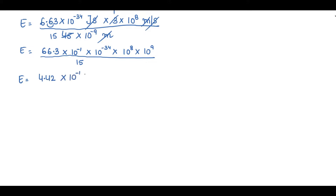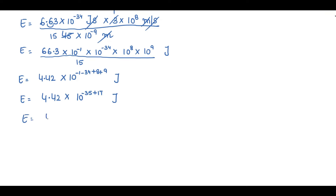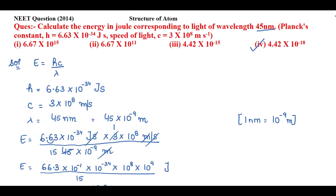Adding the powers of 10: (−1) + (−34) + 8 + 9 = −35 + 17 = −18. Therefore E equals 4.42 × 10⁻¹⁸ joules. Looking at the options, the correct answer is the fourth option.